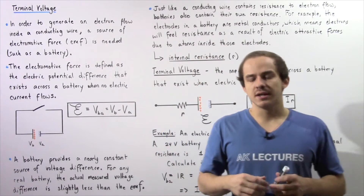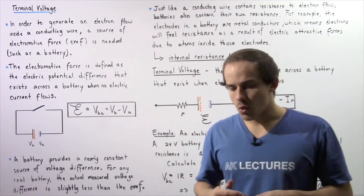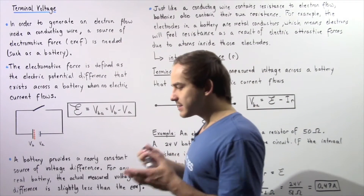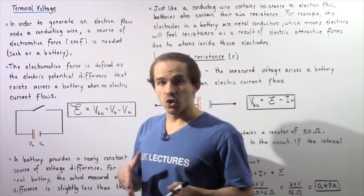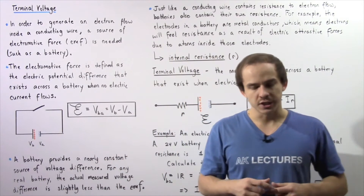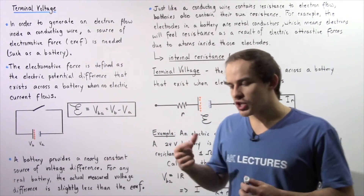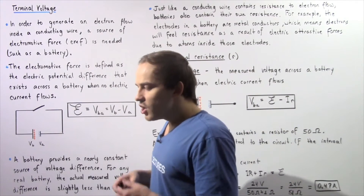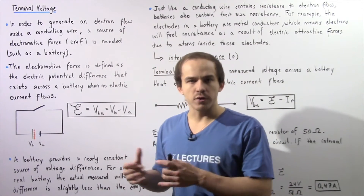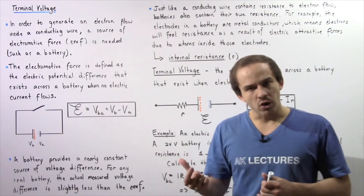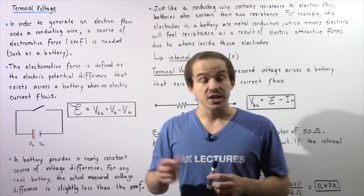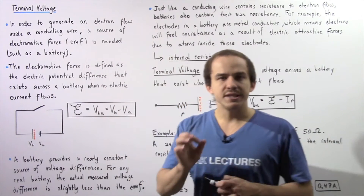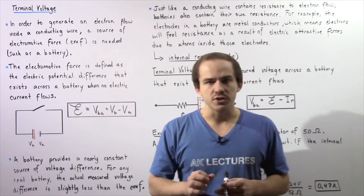In this lecture, we're going to discuss the concept of the electromotive force and terminal voltage. Let's begin by discussing how an electron flows within a closed circuit. If we want to generate an electron flow within a conducting wire, we need an electromotive force. One common source of electromotive force is a battery.